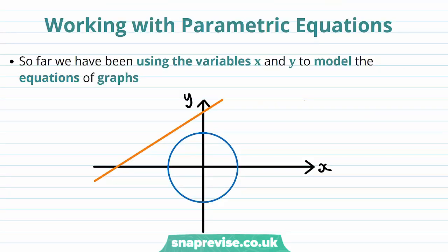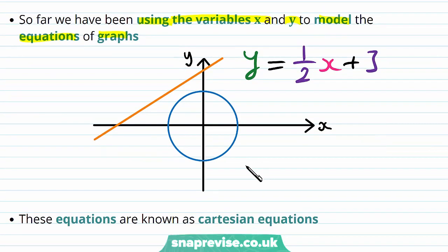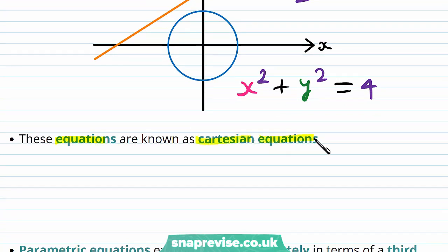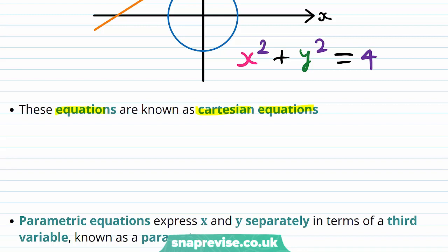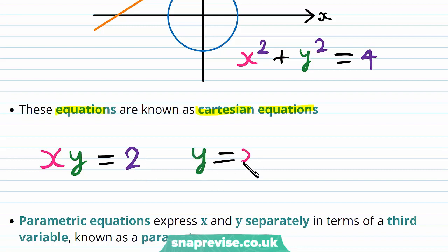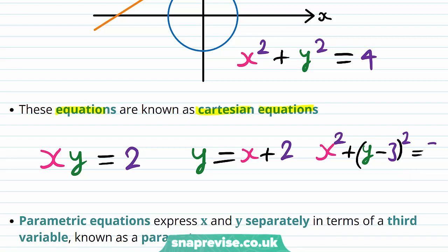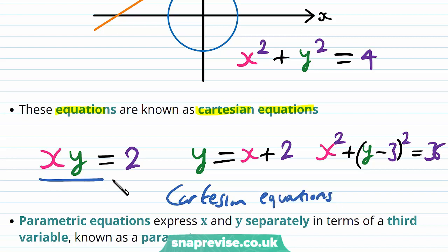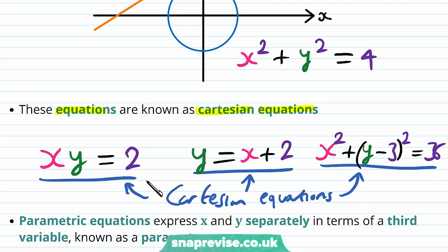So how do we work with parametric equations? So far we have been using the variables x and y to model the equations of graphs. For example we may have the straight line y is equal to one half x plus 3, as well as the circle x squared plus y squared is equal to 4. These equations are known as Cartesian equations, because they only have x and y involved — there is a direct relationship between x and y.